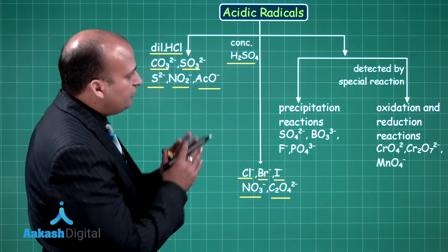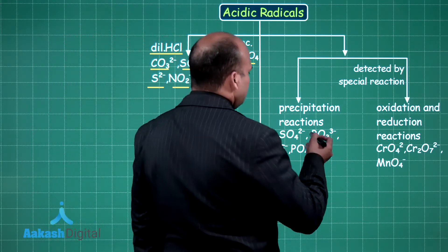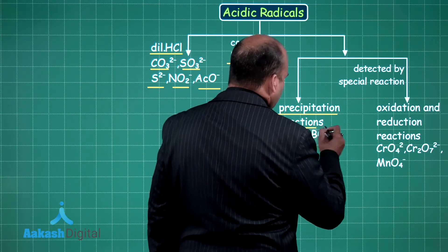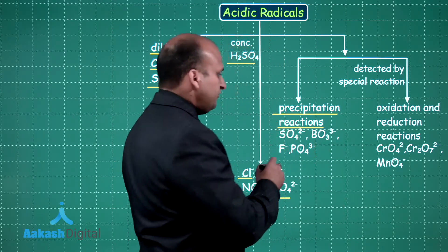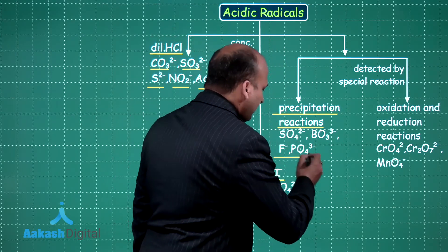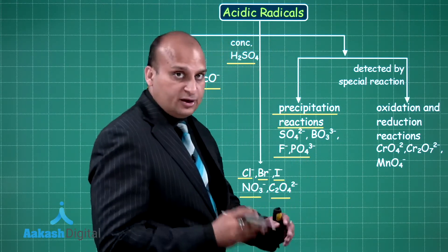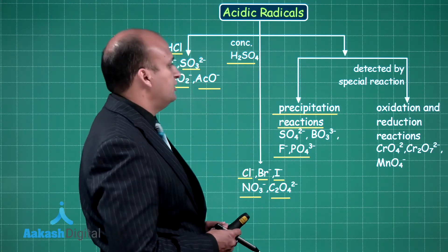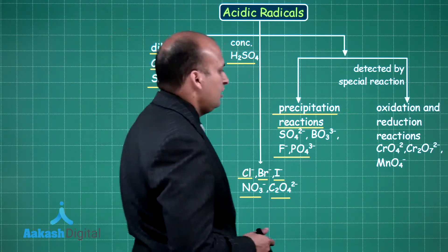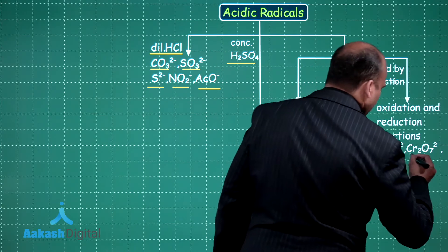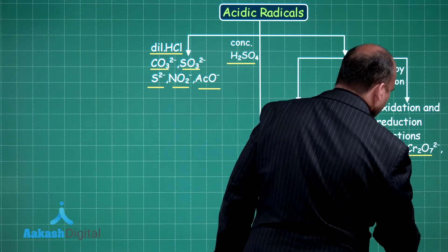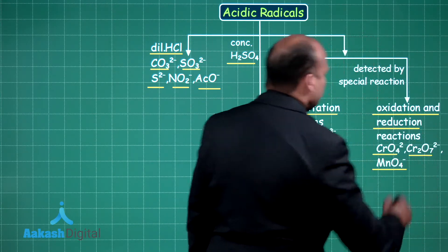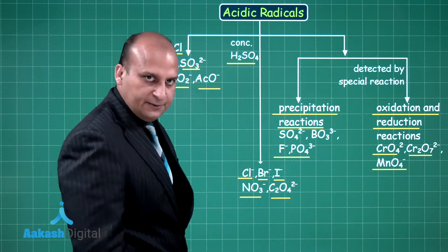For detection of sulfate ion, borate ion, fluoride, and phosphate, we require precipitation reactions. And for chromate, dichromate, and permanganate, we require oxidation and reduction reactions.